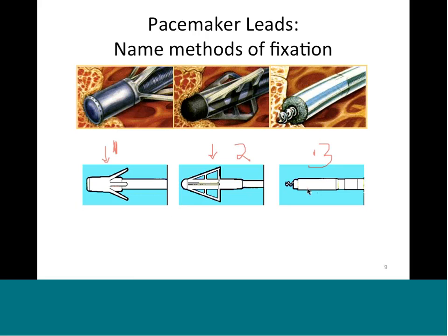The third one is the screw-in lead - you can see the screw at the end. The screw-in lead is used inside the ventricles because the ventricles are thick, so you can screw them into the wall. The advantage is it doesn't come out - the chance of dislodgement is less. The disadvantage and potential complication is you can screw too much and cause perforation - look how sharp that is.